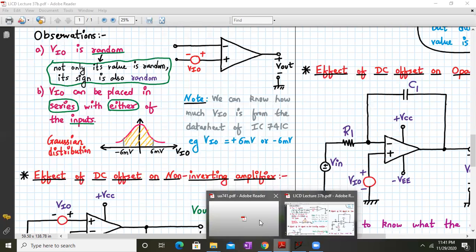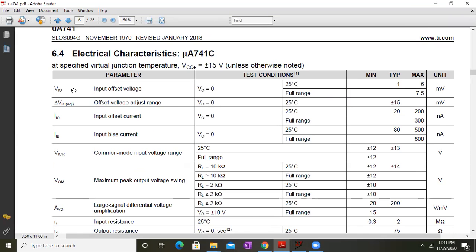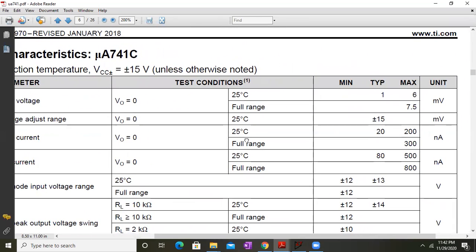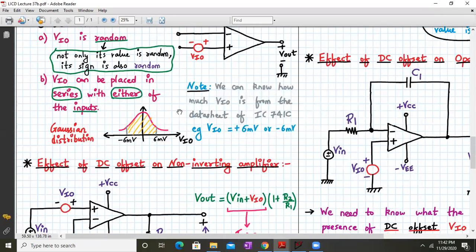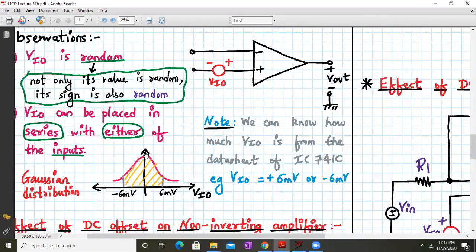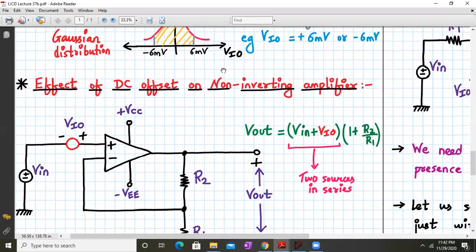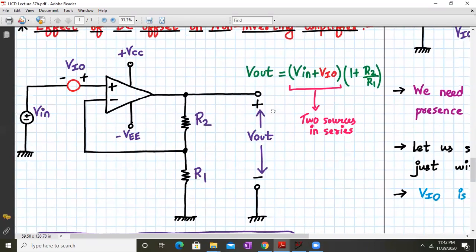I have the datasheet with me. This is the datasheet; the first parameter we can see here is the VIO value, and its value is around 6 millivolts under these test conditions. According to Gaussian distribution, it can lie anywhere between +6 and -6 millivolts. Now we know what input offset voltage is.